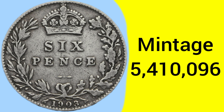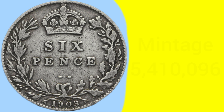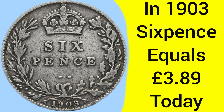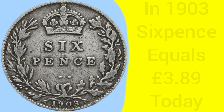So a small coin — one of the smaller coins you'd use in your change back in the day. The mintage for this coin was 5,410,096, which is a fairly average mintage; there are many coins with mintages much higher and many with much lower. A sixpence piece is of course worth sixpence — half of a shilling, or one fortieth of a pound, meaning there are forty sixpences to the pound sterling under the pre-decimal system. Back in 1903 when the coin was made, a sixpence was equal to £3.89 today, so quite a few things could be bought for sixpence back then.